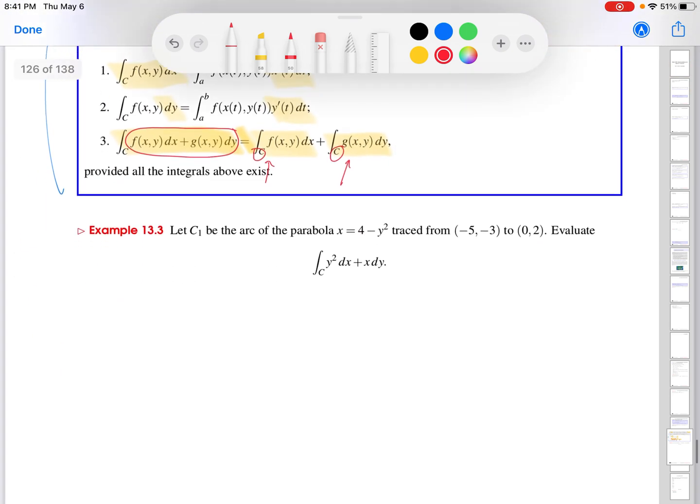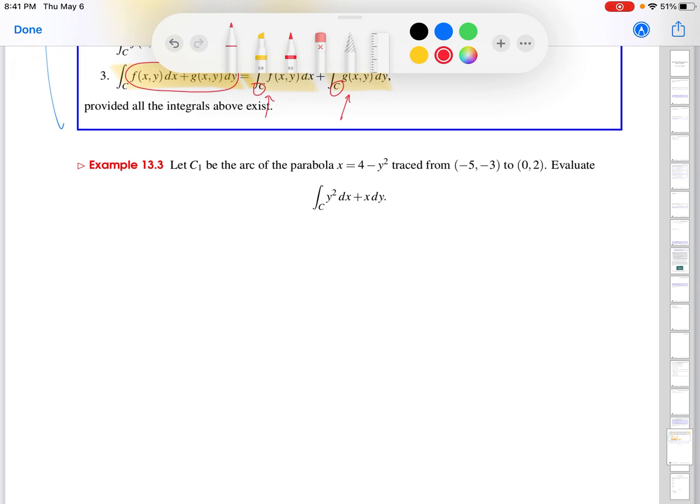With all that out of the way then, let's look at this example to see how this stuff all works. So suppose c1 is the arc of the parabola blah traced from minus 5 and minus 3 to 0, 2.